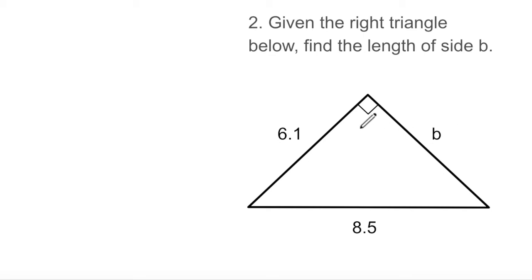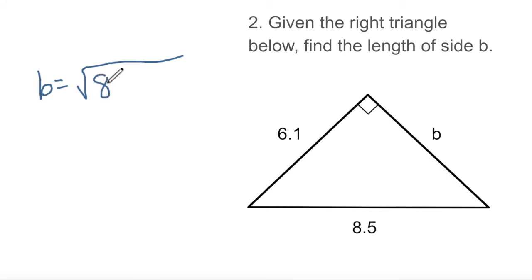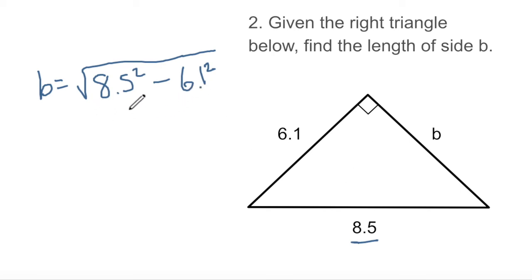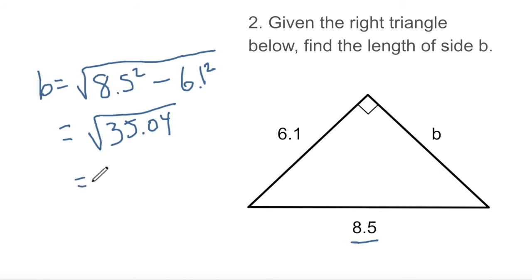In the second problem, we're given a right triangle. Although it's oriented differently, we can see it's still a right triangle because of the marking in the corner. So b is one of the shorter sides, and 8.5 is the hypotenuse. We want to solve for b, so b equals the square root of c squared — which is 8.5 squared — minus 6.1 squared. We know it's minus because b has to be shorter than the hypotenuse; subtracting 6.1 squared from 8.5 squared gives us the square root of 35.04, which is 5.92. Side b is equal to 5.9.